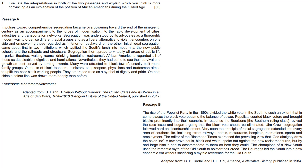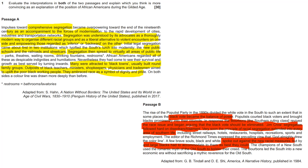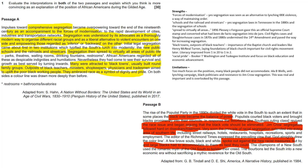You would read both passages, decide which is more convincing based on your own knowledge, and highlight key areas. For Passage A, we could discuss the forces of modernisation — segregation as an alternative to lynching and violence. Schools and railroads: yes, segregation laws in Tennessee in the 1880s. Segregation spread to virtually all areas — we've talked about Plessy v. Ferguson, which gave an official Supreme Court stamp converting de facto into de jure segregation. The civil rights cases and slaughterhouse cases of the 1870s and 1880s also undermined the 14th Amendment and paved the way for increasing segregation.